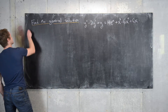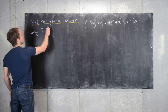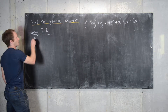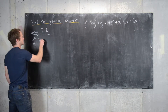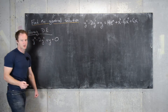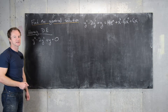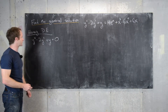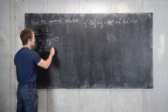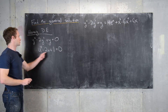The associated homogeneous differential equation is y'' - 2y' + y = 0. In order to calculate the solution, we look at the corresponding characteristic polynomial: u² - 2u + 1, and we want to find its roots.